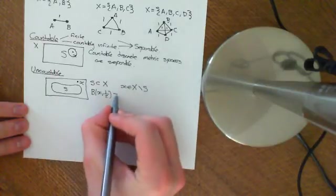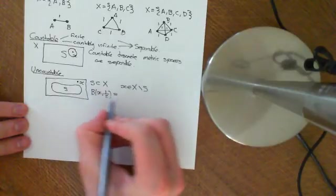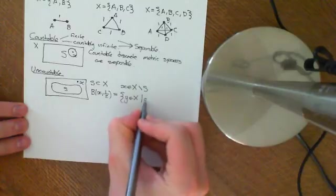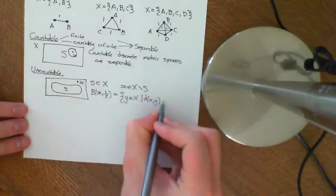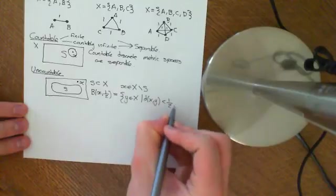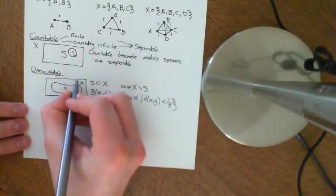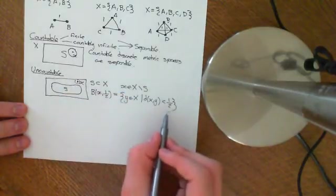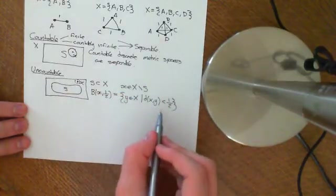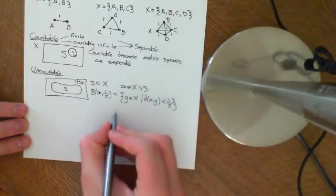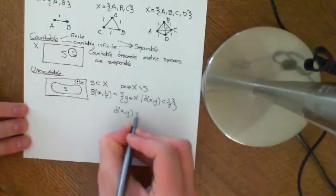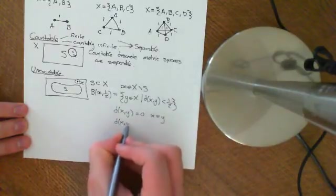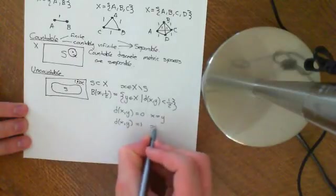Now because it's a discrete metric space, we just need to recall the definition. This means all points Y which are an element of big X such that the distance between X and Y is less than a half. So I can draw this open ball around this point here. But the problem is this is a discrete metric space. So the only two possibilities for the distance are it's either zero or one. So distance between X and Y is equal to zero if X is equal to Y, and distance between X and Y is equal to one if X is not equal to Y.